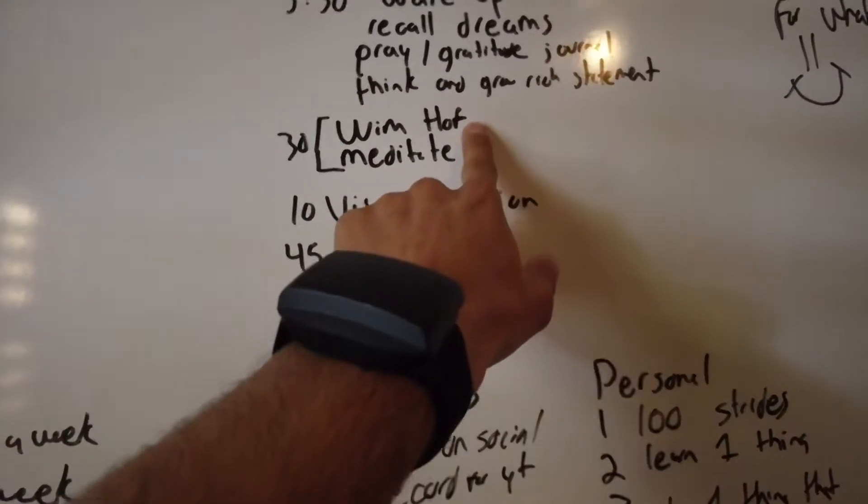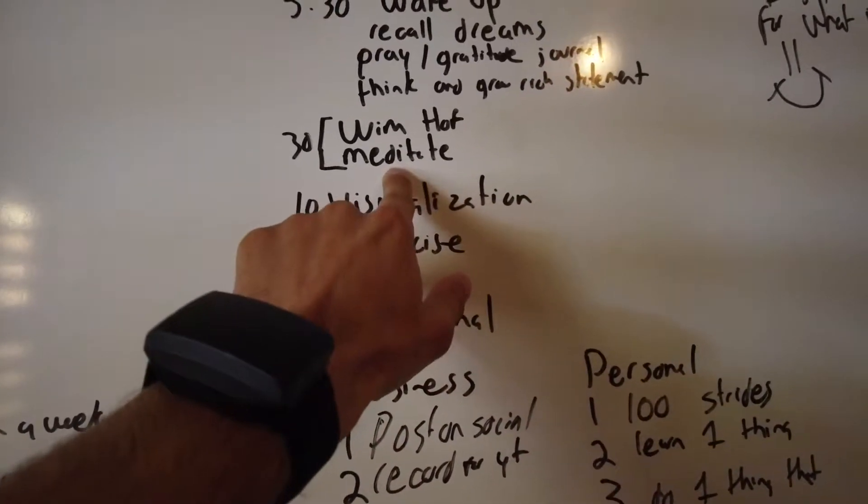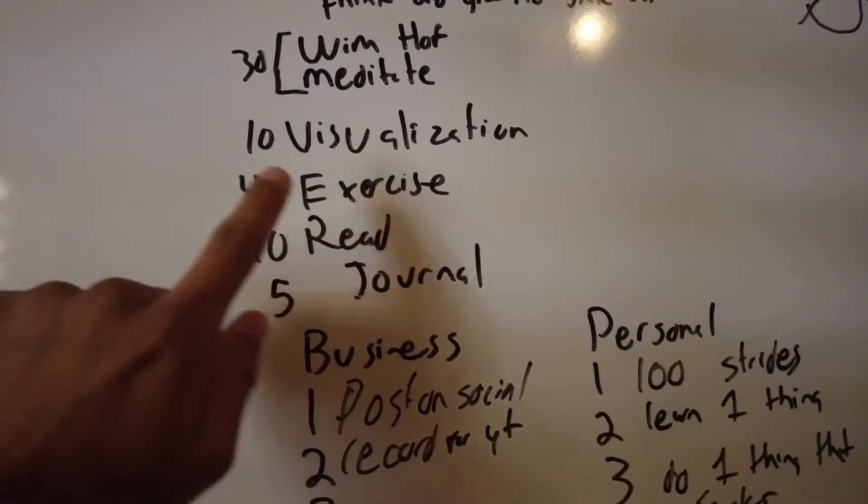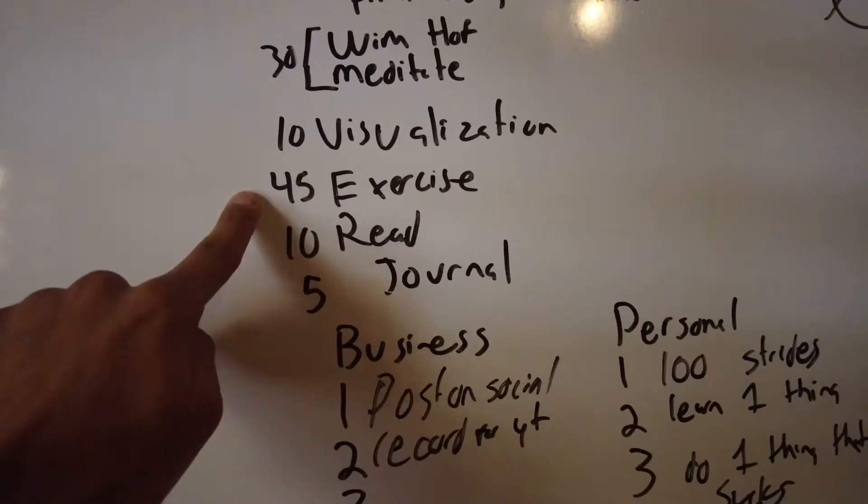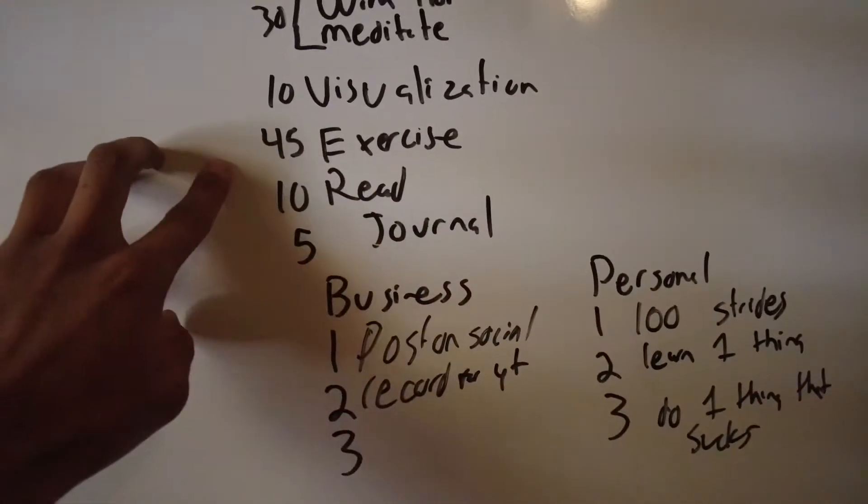I like to meditate after that. I do three rounds of the Wim Hof and then ten minutes of meditation if I can, but if not I'm shooting for five every day. Then I do ten minutes of visualization and then my first workout of the day for 75 Hard, which is 45 minutes of exercise. I then read.